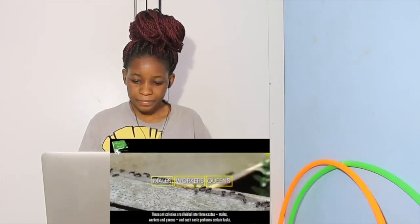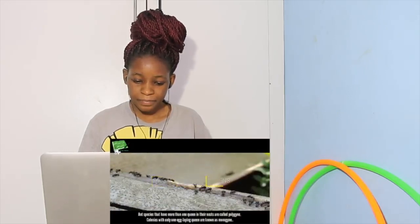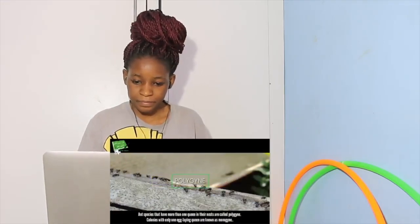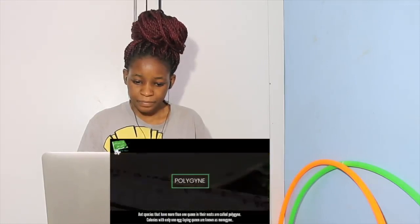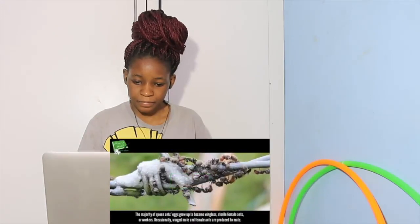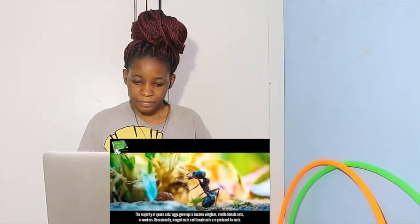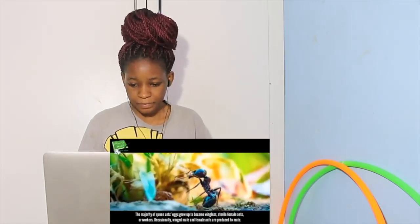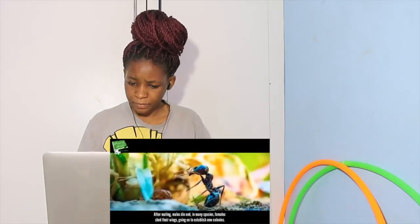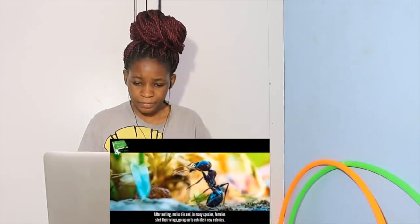Each caste performs certain tasks. Species that have more than one queen in their nest are called polygyne. Colonies with only one egg-laying queen are known as monogyne. The majority of queen ant eggs grow up to become wingless, sterile female ants or workers. Occasionally winged male and female ants are produced to mate. After mating, males die and in many species females shed their wings, going on to establish new colonies.